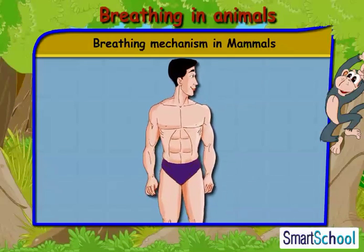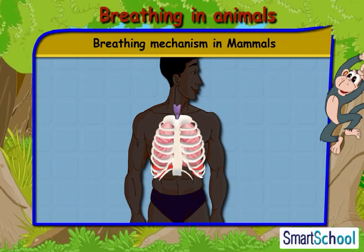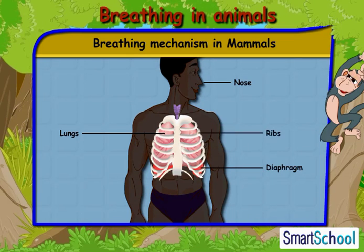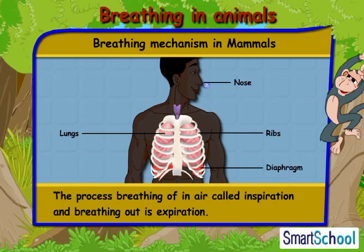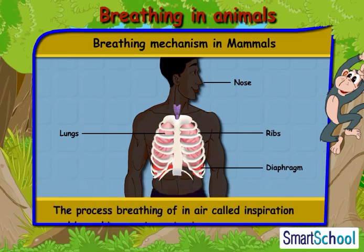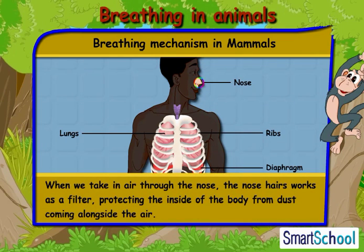Let us take the example of a human being. The breathing process in human beings involves the lungs, nose, diaphragm, and ribs. The process of breathing in air is called inspiration, and the process of breathing out air is called expiration.